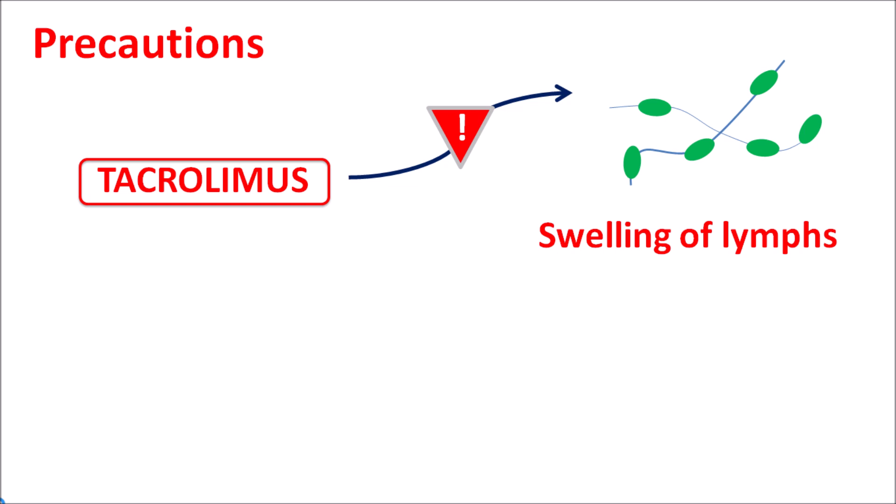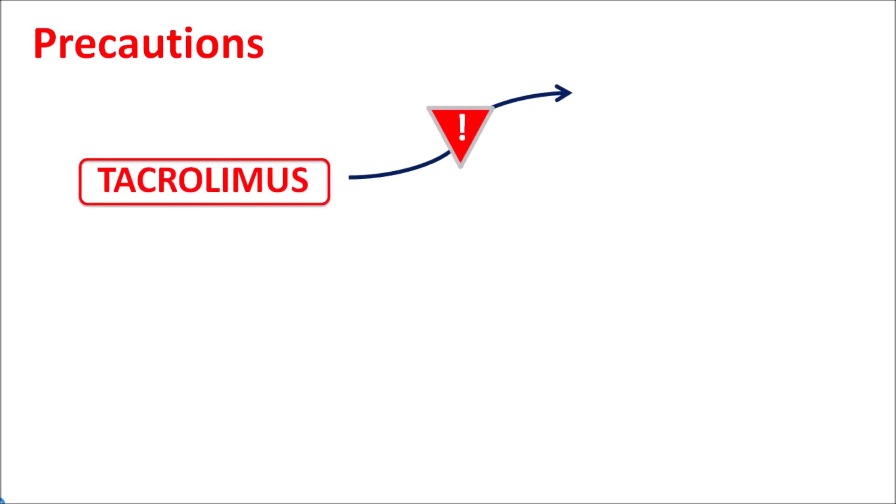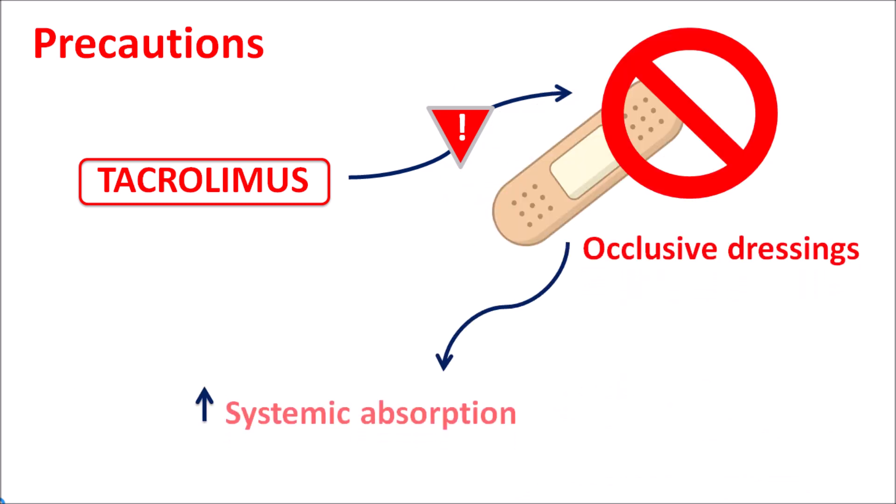Caution should be taken because tacrolimus can increase the swelling of lymph nodes. Even though this effect is more pronounced by systemic route, care should be taken when applied topically due to any minor absorption through the skin. Similarly, when tacrolimus is applied, occlusive dressing should not be placed because it can increase systemic absorption, leading to immunosuppression, viral infections, and swelling of limbs.